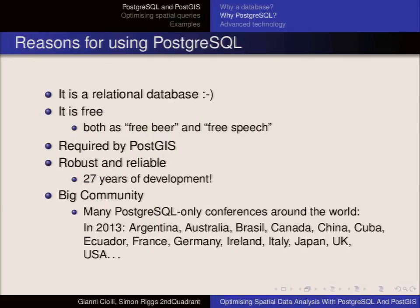Why PostgreSQL specifically? It's a relational database, which is already a good reason, but it is also free — both as in beer and as in speech. It's also required by PostGIS, so if you want PostGIS you need Postgres anyway, like wanting a car and needing the wheels. It's robust and reliable, having been developed for 27 years, and it has a big community. There are lots of Postgres-only conferences — thematic conferences dedicated entirely to Postgres. So you won't be left alone if you use Postgres.